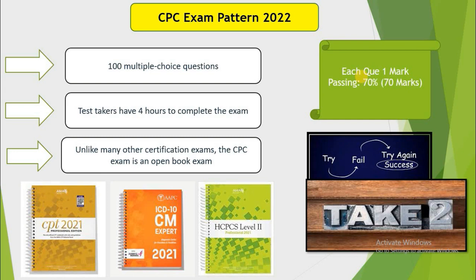Each question carries one mark and the passing percentage is 70%, so the passing mark will be 70. You will have two attempts to complete this exam. These changes are effective from January 2022 — all AAPC certification exams will be four hours with 100 questions, excluding the CPPM and CPP exams.